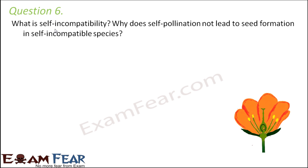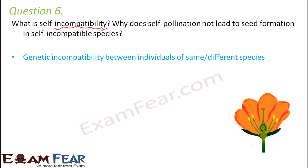Whenever the word incompatible comes into picture, that means there is some incompatibility or mismatch between the pollen and the pistil. Genetic incompatibility between individuals of same or different species is known as self incompatibility. It prevents self pollination. Now, in this flower, if the pollen grains produced by the stamen and the stigma are not compatible with each other, that is pollen-pistil incompatibility is there,